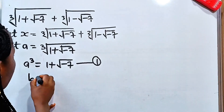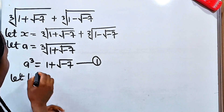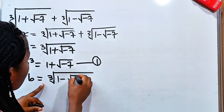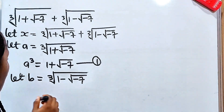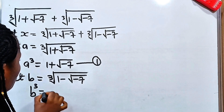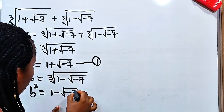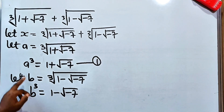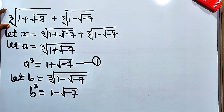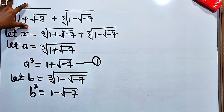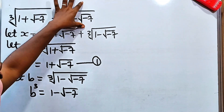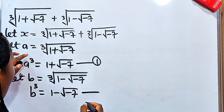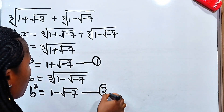Similarly, let b be equal to the cube root of (1 minus square root of minus 7). Then b³ should be equal to 1 minus square root of minus 7. We are cubing because these are cube roots — to remove the cube root, we need to cube a and cube b. That is the reason why we're getting a³ and b³.